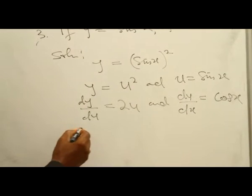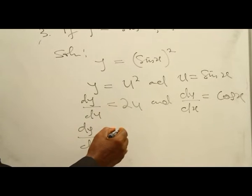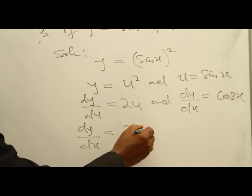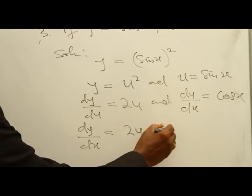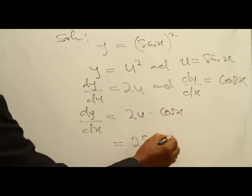Now, bringing them together to have dy/dx, we get 2u multiplying cos x. The result is equal to 2 sin x.